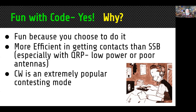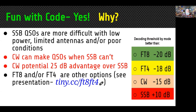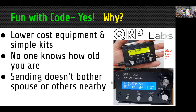CW is also an extremely popular contesting mode, with many contesters preferring CW and not taking part in some of the single sideband contests. Single sideband QSOs are probably the most difficult HF contacts because they require a better signal-to-noise ratio than CW or the digital stars FT8, FT4, and JT65. If you're interested in those, I have a whole presentation at tiny.cc slash FT8 FT4. Whenever you see this symbol or font, that means there's material you can click on for additional information.